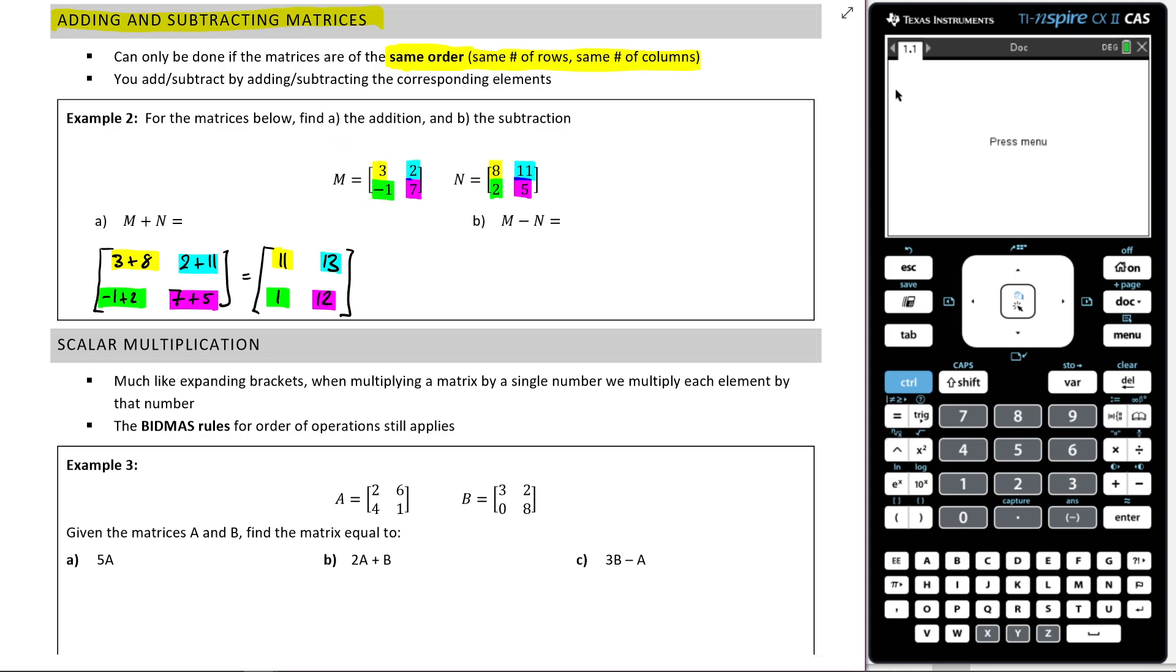And then it would be exactly the same process for subtraction. So for subtraction, you'd go three minus eight, two minus 11, negative one minus two, seven minus five.